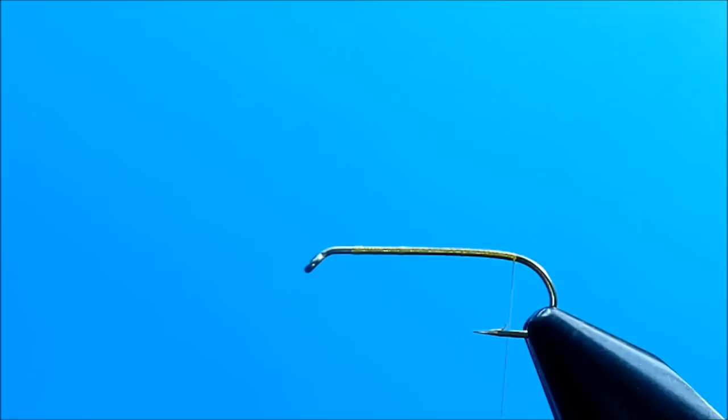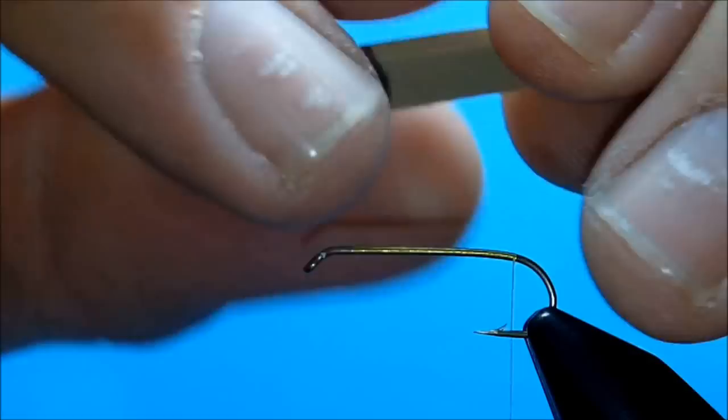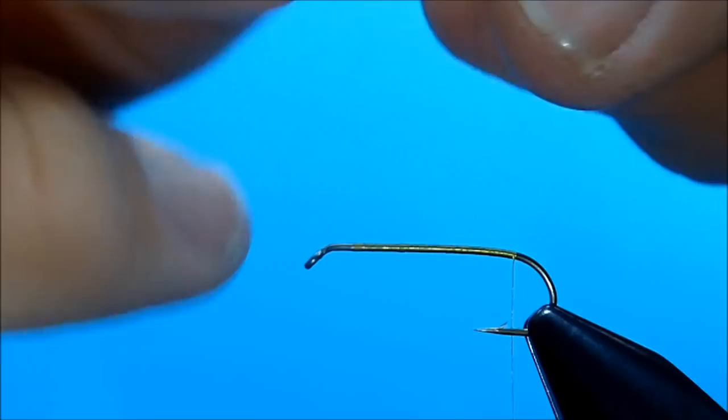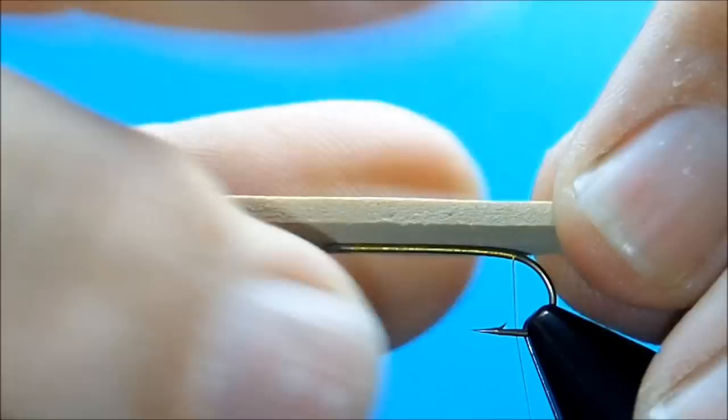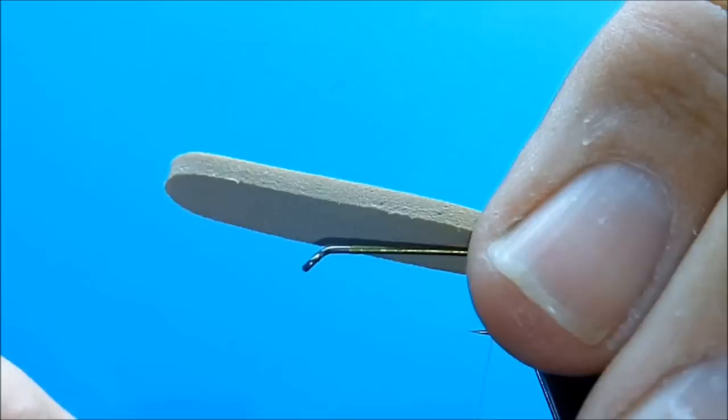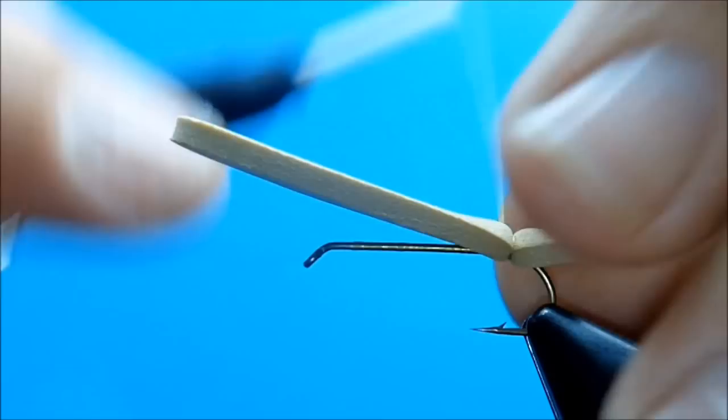Our first overbody on this is a 2mm tan foam. I went ahead and cut it with a Chernobyl Ant tapered cutter, just find it a little easier. You don't have to, you can use scissors, cut it square and just taper the ends. What I'm going to do is tie it in and extend it about a quarter of the body length past the end of the hook. Now when you're tying this in, you've got to be somewhat careful because you can cut the foam. So I'll slowly tighten it down.